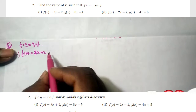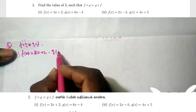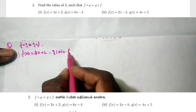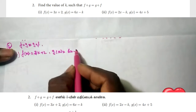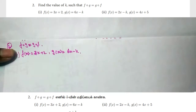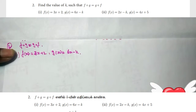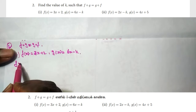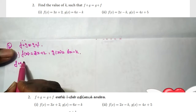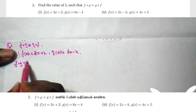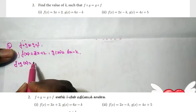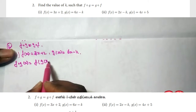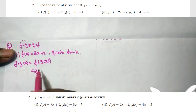Okay. Next, g of x equals 6x minus k. Okay. First, we are going to find out f∘g of x.